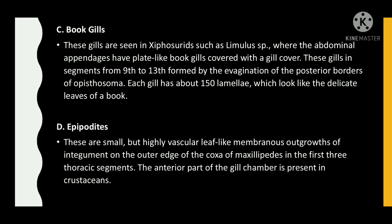These gills in segments from 9th to 13th are formed by the invagination of the posterior borders of the opisthosoma. Each gill has about 150 lamellae, which look like the delicate leaves of a book. Epipodites are small but highly vascular leaf-like membranous outgrowths of integument on the outer edge of the coxa of maxillipeds, in the first three thoracic segments, forming the anterior part of the gill chamber in crustaceans.